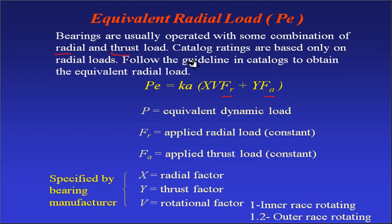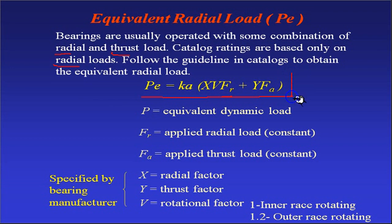The catalogs used for selecting bearings are based only on radial loads. So the thrust load must be converted into an equivalent radial load. To do this conversion, you follow certain guidelines in the catalog to obtain the equivalent radial load. Each bearing type has its own specific guideline for converting axial load into equivalent radial load.